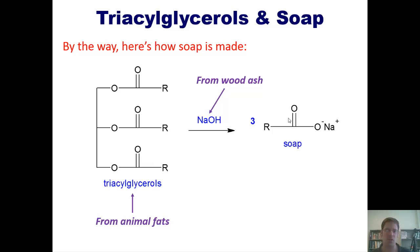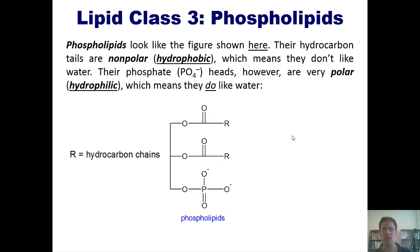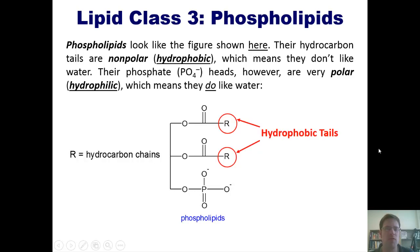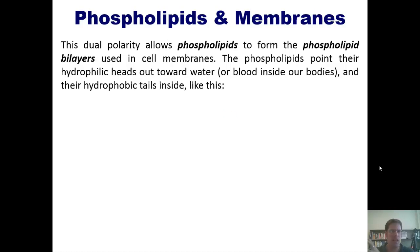Now let me introduce lipid class three: phospholipids. Phospholipids look very much like triacylglycerols, except that one of the fatty acid groups has been replaced with a phosphoryl group. Their hydrocarbon tails — these R groups — are very hydrophobic, meaning they don't like water because water is polar and they are non-polar. Remember: like dissolves like. The phosphate heads, however, are very polar or hydrophilic, meaning they do like water. This dual polarity — non-polar tails and polar heads — allows phospholipids to form the phospholipid bilayers used in cell membranes.